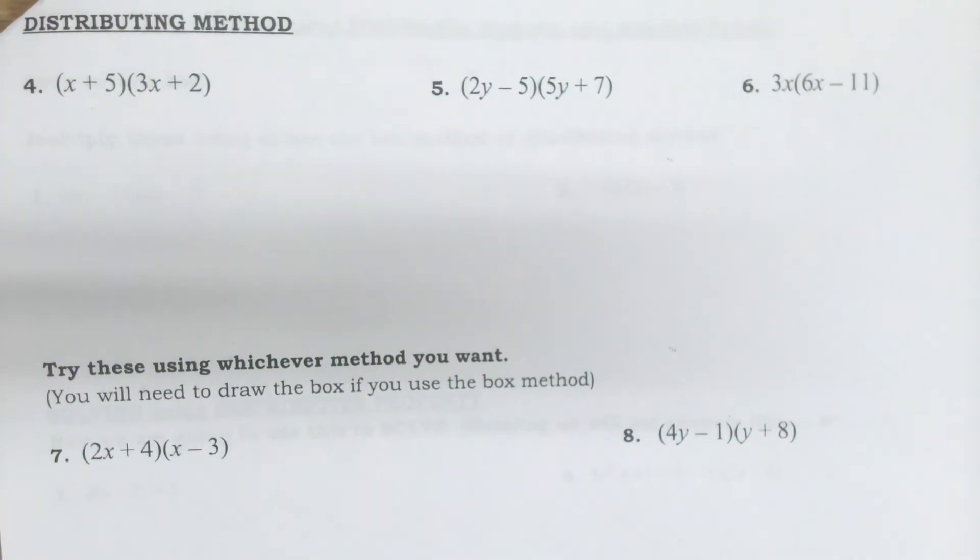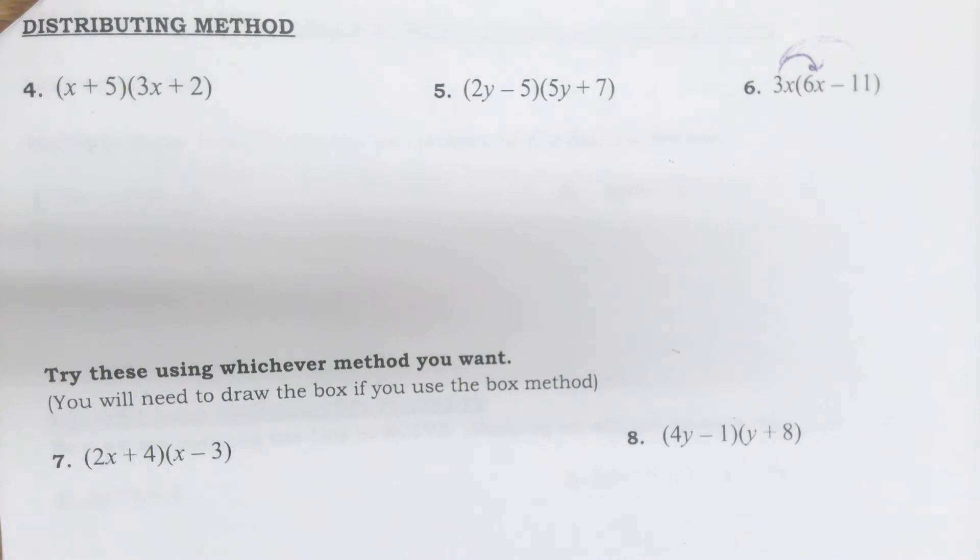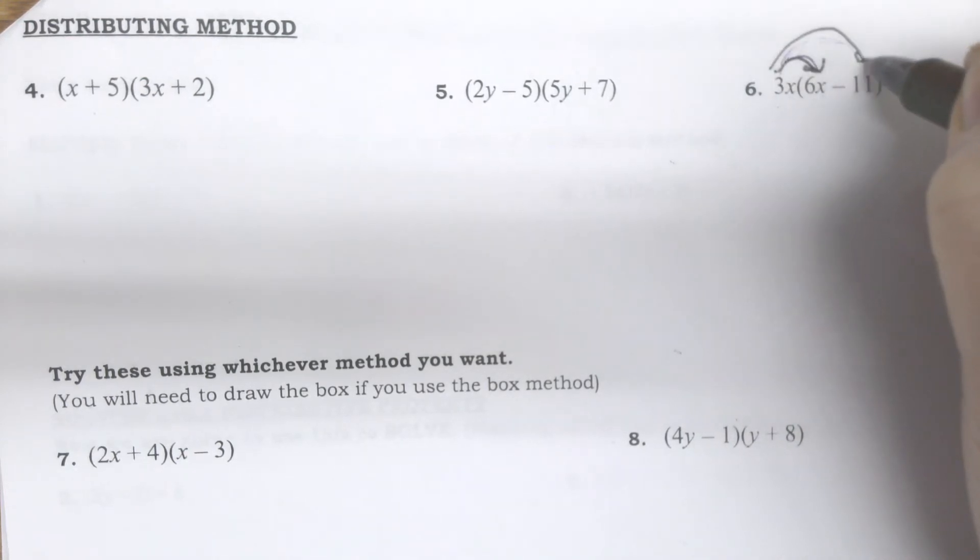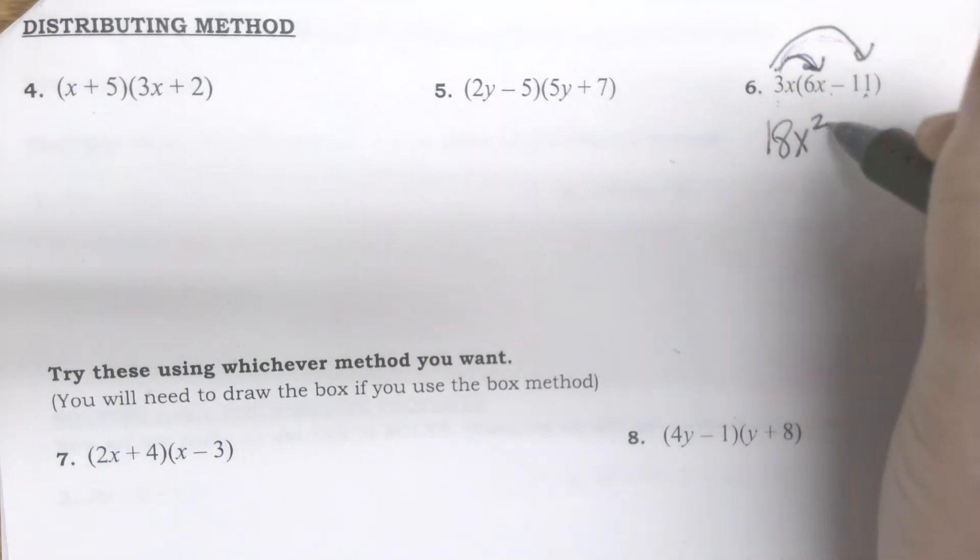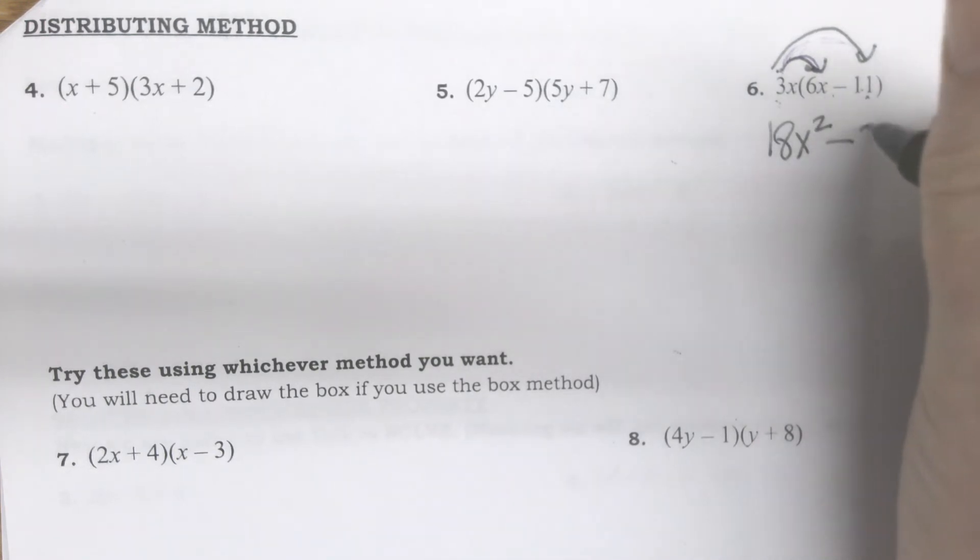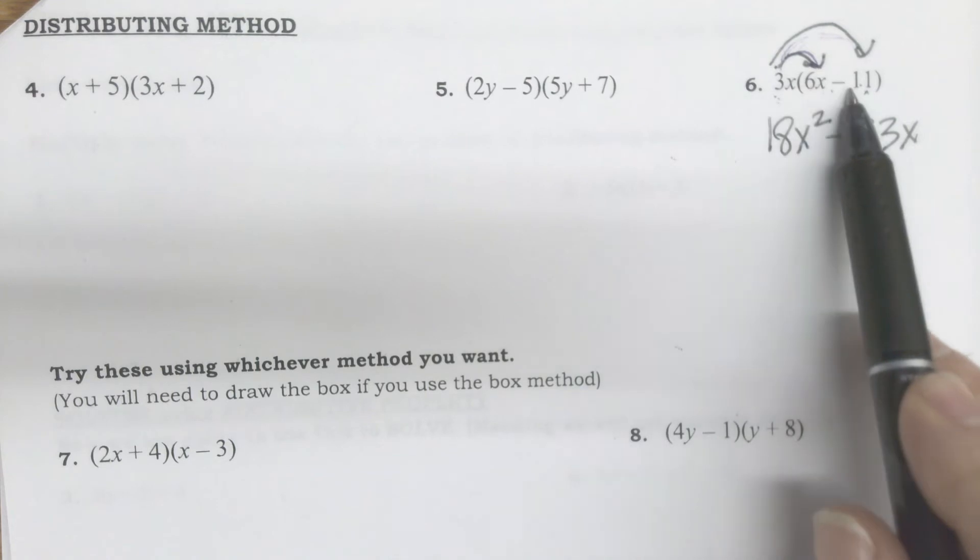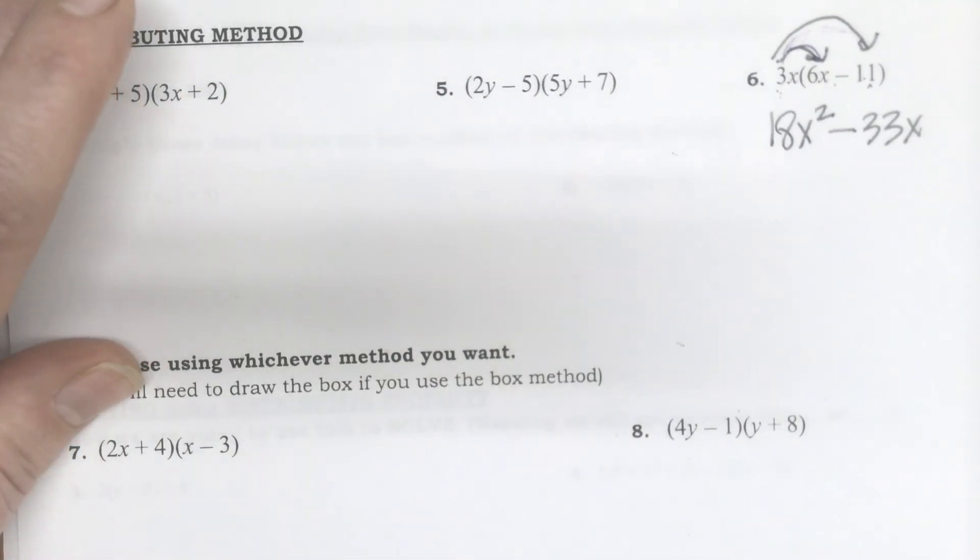We're going to look at a different way of doing that same thing. I brought up the distributive property earlier. The distributive property means I multiply everything in the first number by what's in the second. This first number times both terms. So 3x times 6x and then 3x times negative 11.